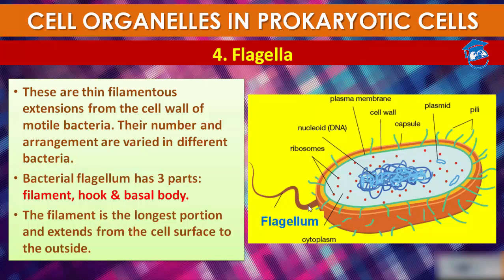Bacterial flagellum is composed of three parts: first is the filament, second is the hook, and third is the basal body. The filament is the longest portion and it extends from the cell surface to the outside.